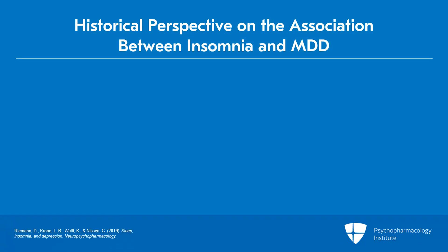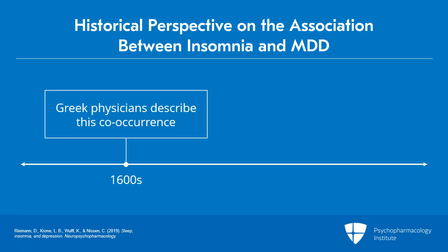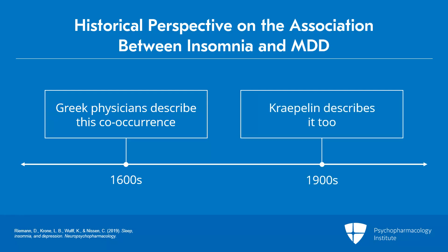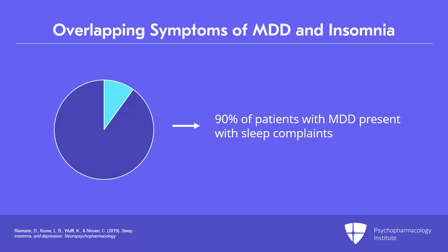The scientific description of the association between insomnia and major depression dates back to the 1600s, when Greek physicians described the co-occurrence of insomnia and depression in the anatomy of melancholia, and later did the founder of modern psychiatry, Kraepelin, in the early 1900s. We know that an episode of depression is commonly associated with insomnia symptoms that can persist as insomnia disorder even if depression remits. Approximately 90% of patients with major depressive disorder present with sleep complaints, and the majority present with insomnia characterized by difficulty initiating or maintaining sleep and early morning awakenings.